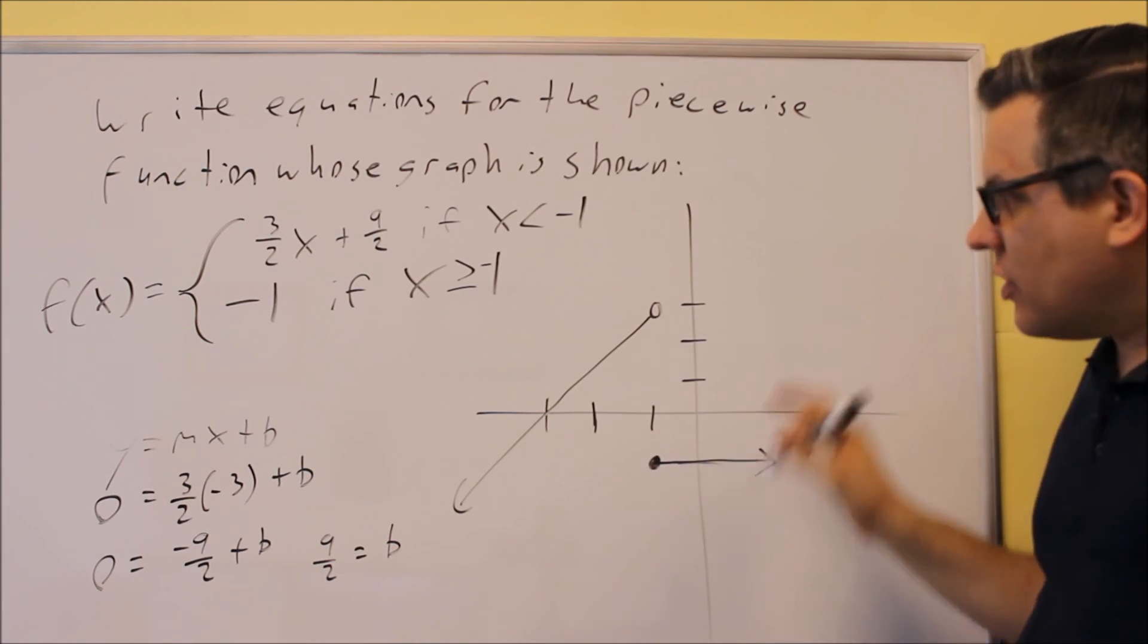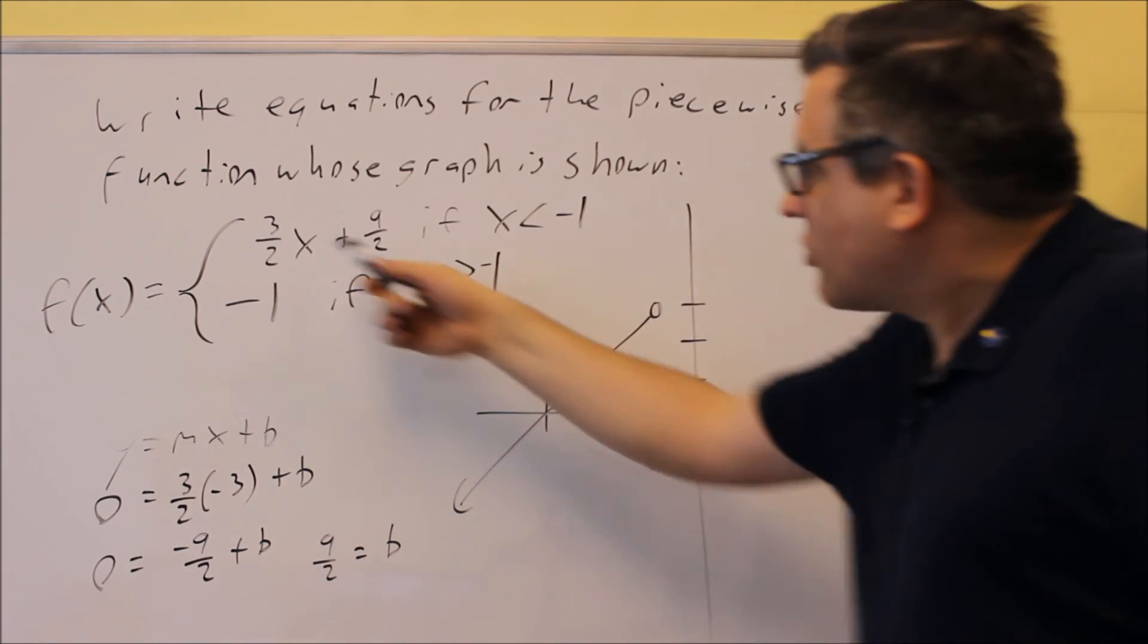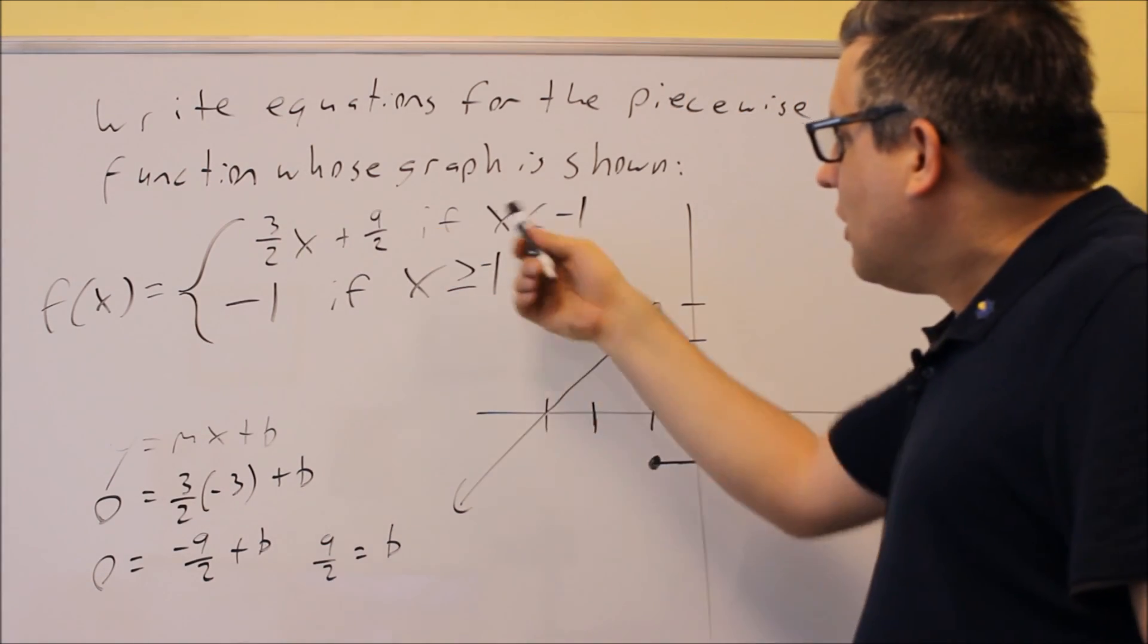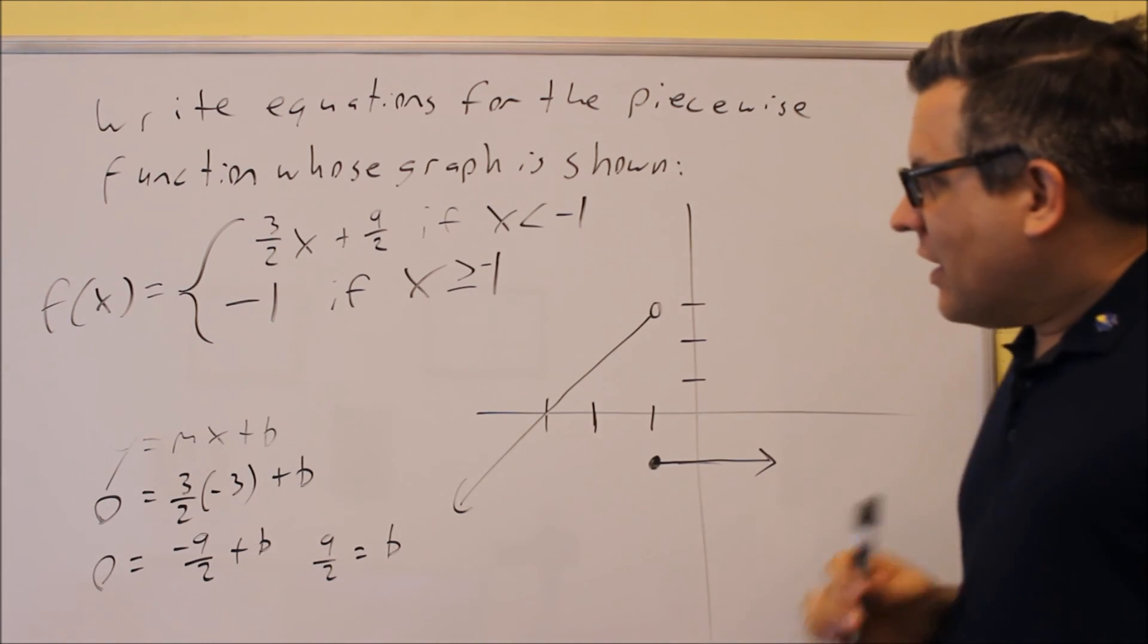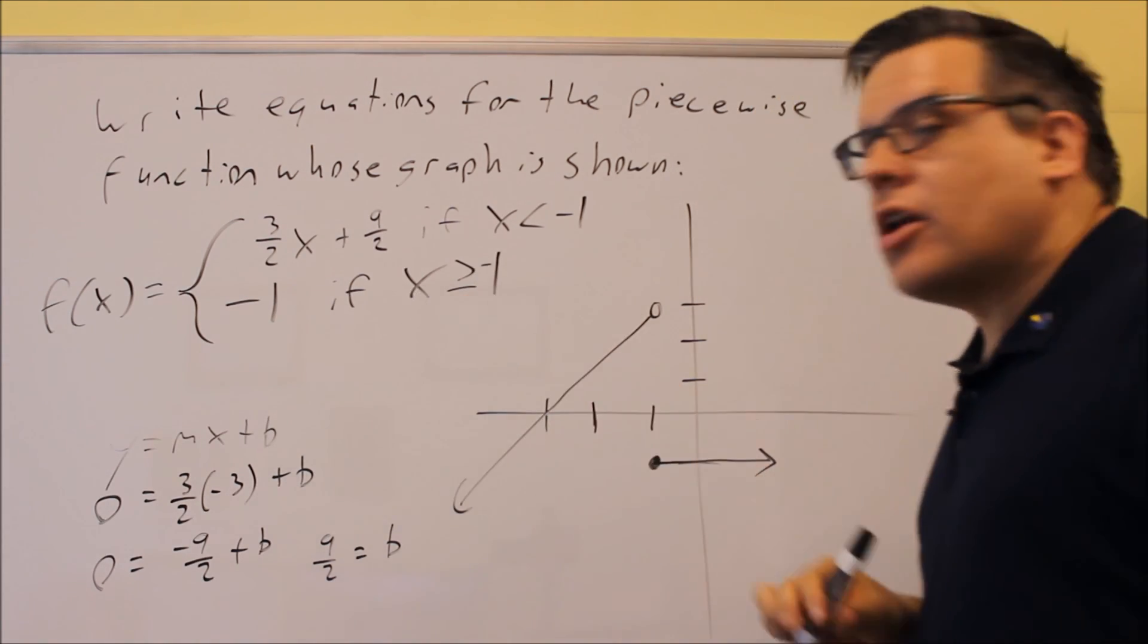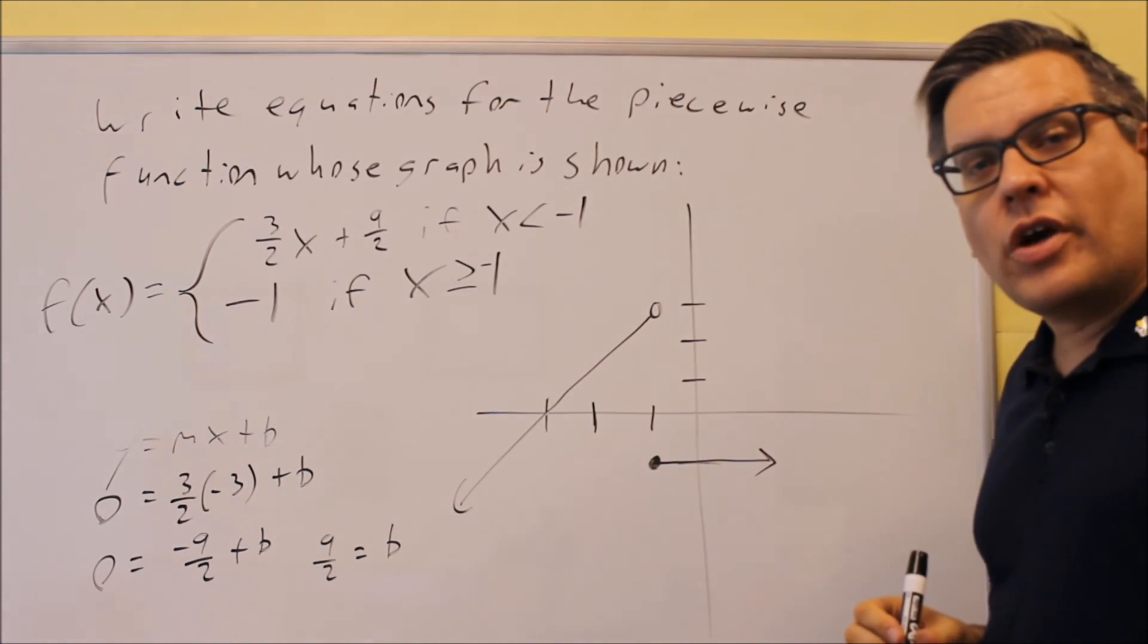Okay, so this would be the equations that you would write that goes along with this particular graph. You have this equation here, mx plus b, so 3 halves x plus 9 halves. So if x is less than negative 1, and I have negative 1, the horizontal line, if x is greater than or equal to negative 1. So your answer is going to be these two equations.